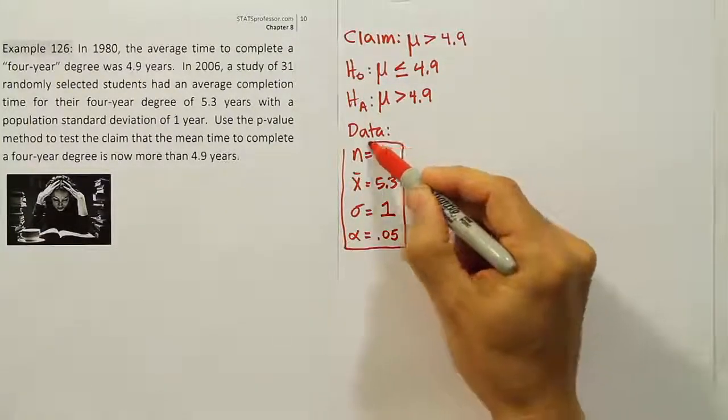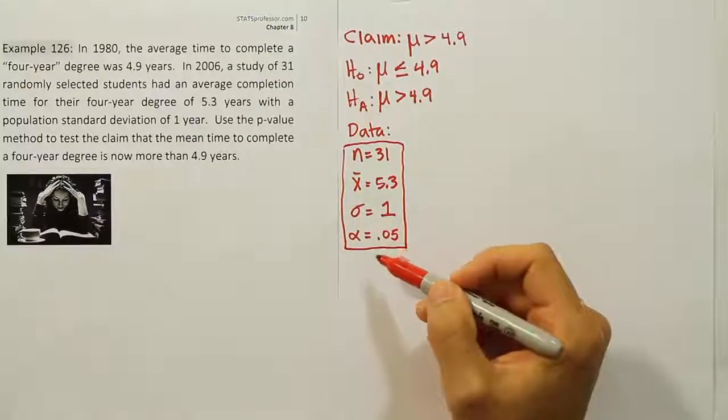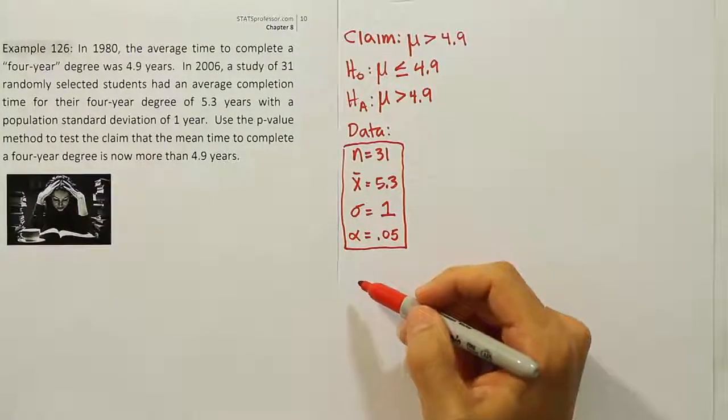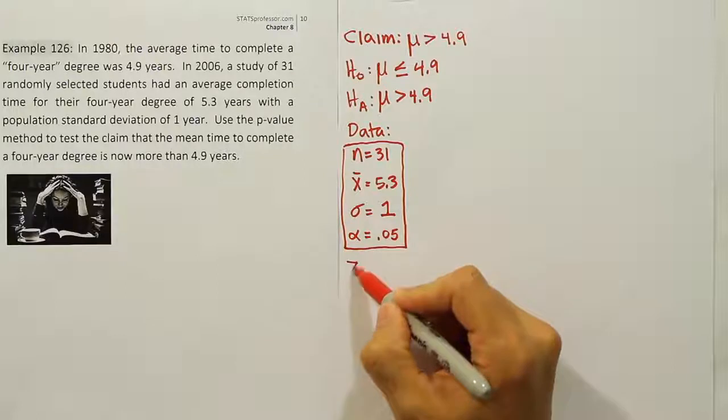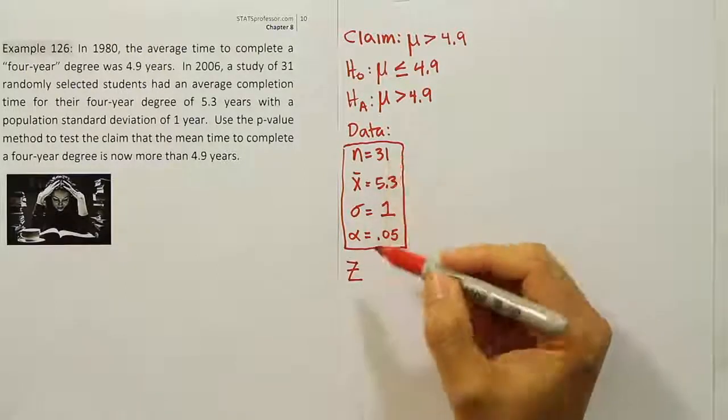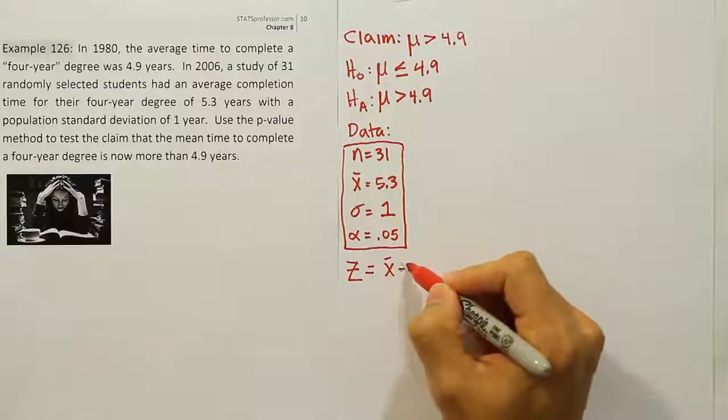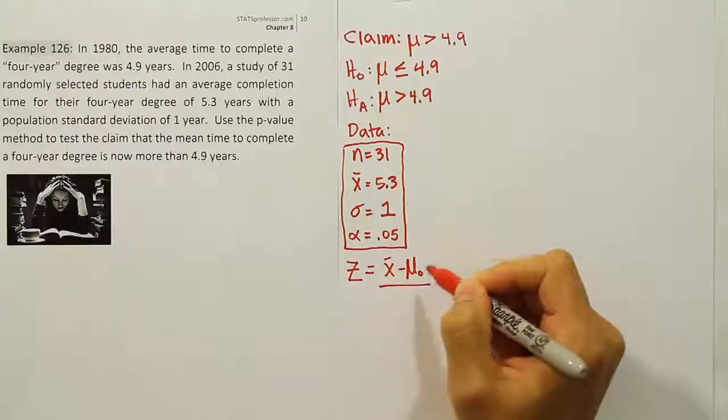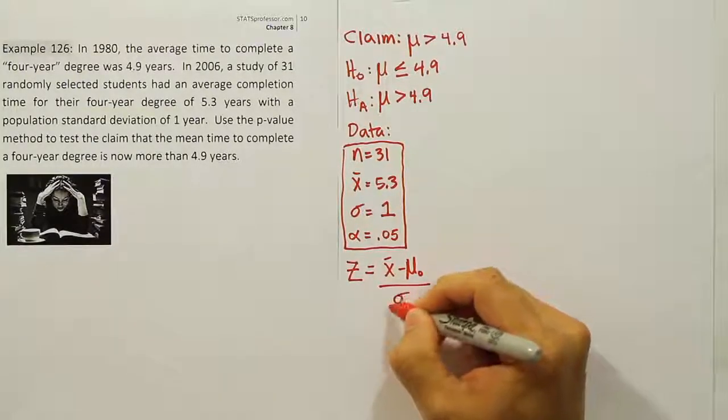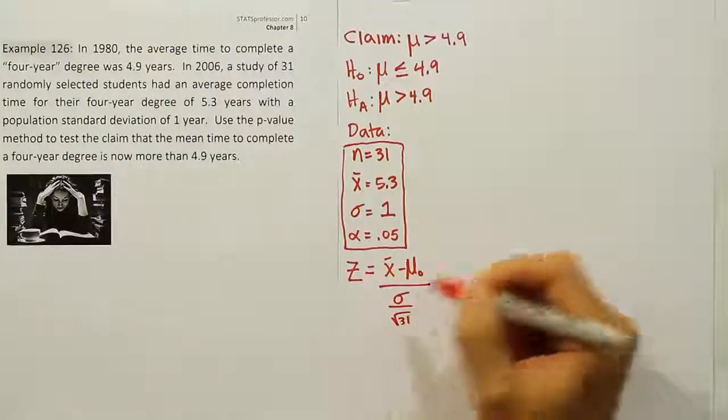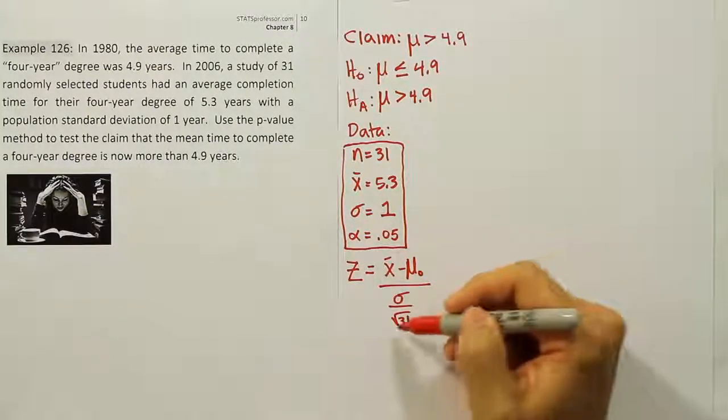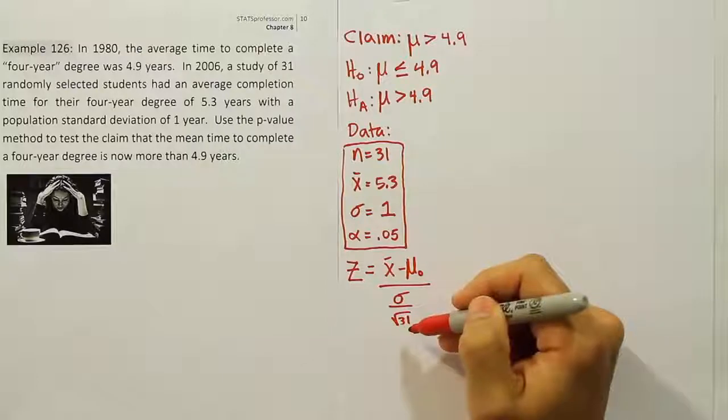So we have our data. Let's take the data and plug it into the test stat formula. The test stat formula is z, because we have a large sample size, something over 30. It's equal to x bar minus mu sub 0, fraction bar sigma divided by the square root of 31. I should have wrote square root of n, but I went ahead and put the n in there.